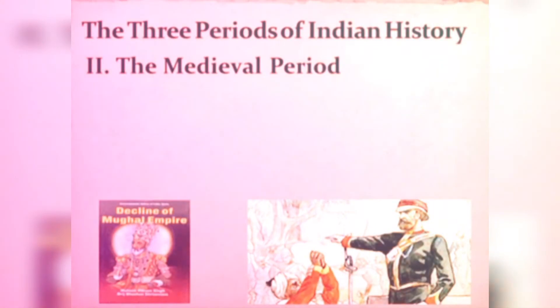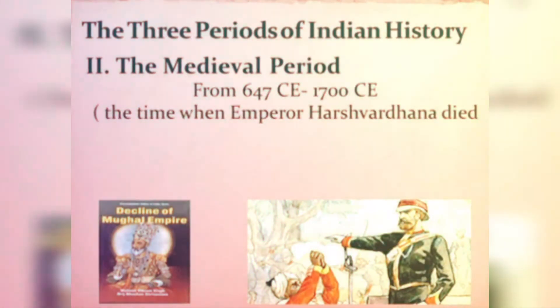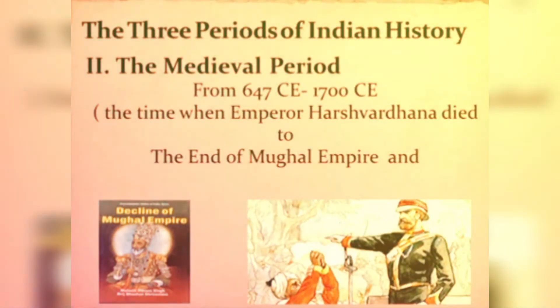This year in class 7th, you will be reading the second period of Indian history — that is, the medieval period. Medieval means middle age. The medieval period extends from 647 CE to 1700 CE. It starts from the time when Emperor Harshavardhan died, to the time when two important events were happening: first, the Mughal Empire started to break down, and second, it was the beginning of British power in India.